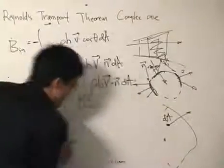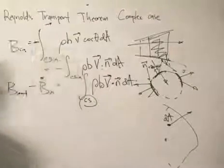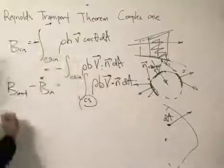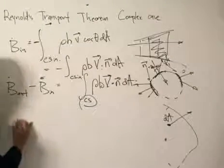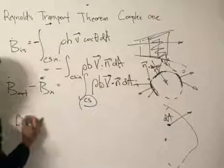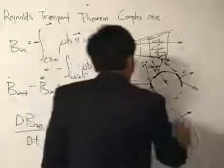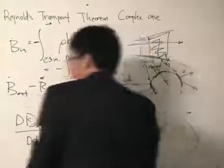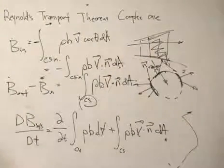If we re-implement that into Reynolds Transport Theorem, we get our final equation. That is the final equation — the form of Reynolds Transport Theorem that we spend most of our time working with.